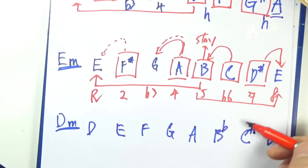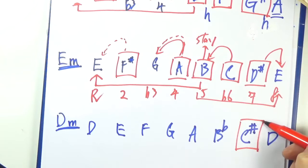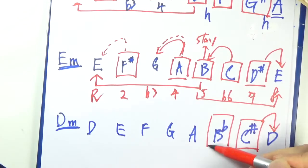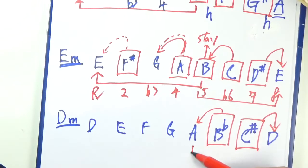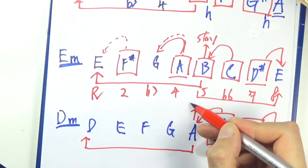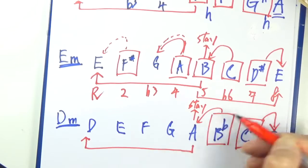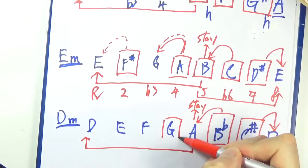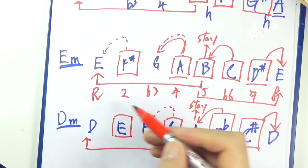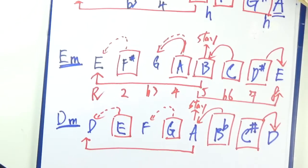Major 7 up to the root, flat 6 down to the 5th, 5th resolve it down to the root or you can stay, 4th going to the 3rd, major 2nd going to the root.